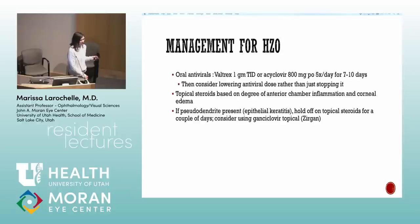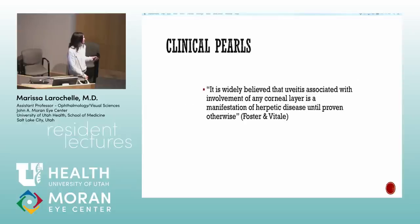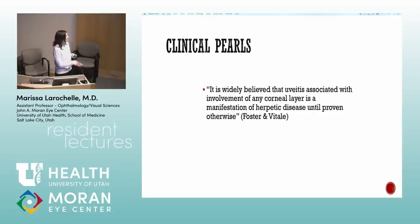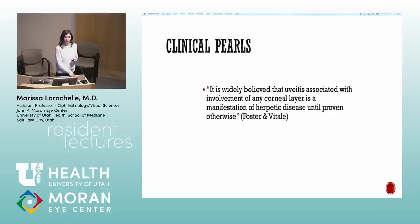If they have a dendrite, start with antivirals first. A great quote from Dr. Vitale in the Foster book: 'It is widely believed that uveitis associated with the involvement of any corneal layer is a manifestation of herpetic disease until proven otherwise.'